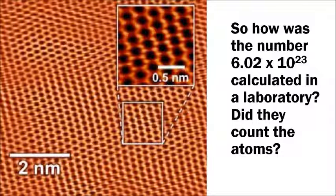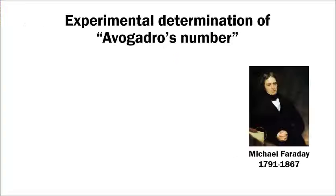Scientists did not actually count individual atoms to find Avogadro's number. Here we have an image generated from a scanning tunneling microscope showing individual atoms of an element — at this scale, individual atoms are clearly on the order of picometers, less than one nanometer. To find the number, two pieces of information involving electric charge and electrochemistry were combined.